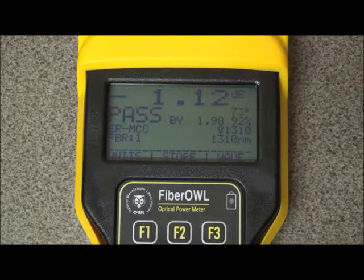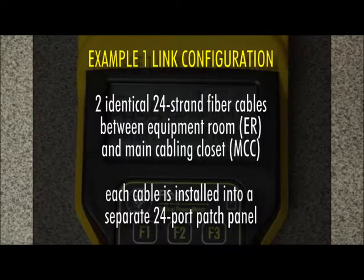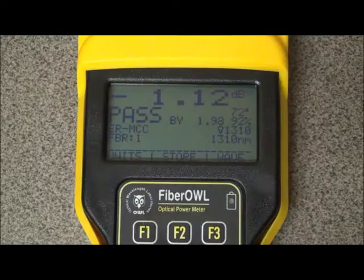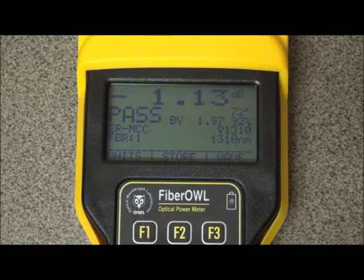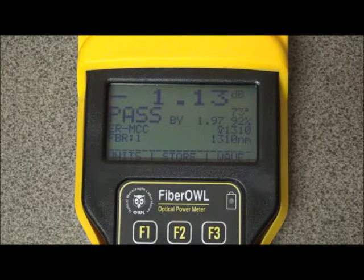Here are a couple of helpful examples. In the first example, let's say there are two identical 24-fiber cables installed between the equipment room and the main cabling closet — the ER-MCC stored link already defined — and each of those 24-fiber cables is installed into a separate patch panel. We want to make sure they're all named appropriately so we know which patch panel and which port were tested. A different fiber label can be used for each patch panel, for example, patch panel 1 colon and patch panel 2 colon.